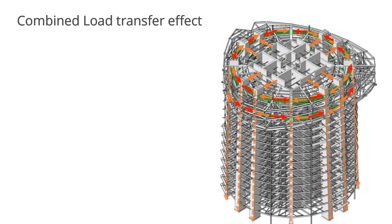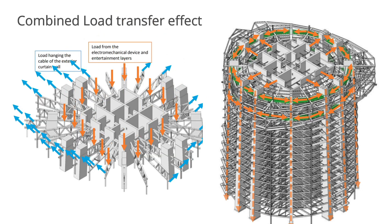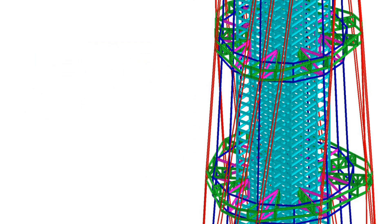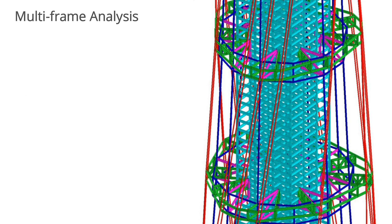This diagram shows the combined effect of lateral and gravity load transfer. In the cantilever end of the radial truss, there are cables hanging the exterior curtain wall of each zone below. The building resists lateral loads through three layers of structure: the super-core is the first layer, the double belt truss and super-columns are the second layer, and the outriggers and radial trusses are the third layer.